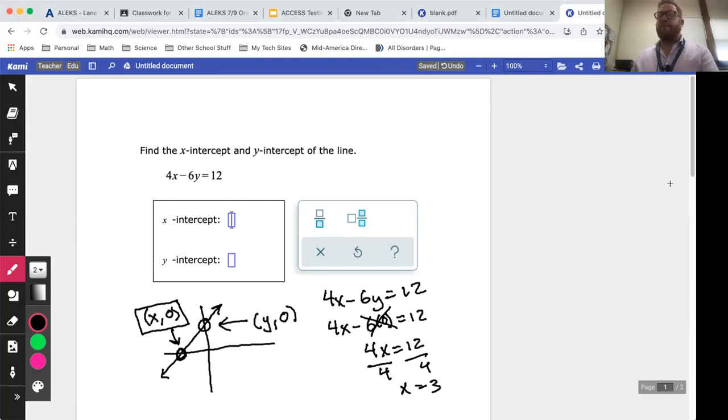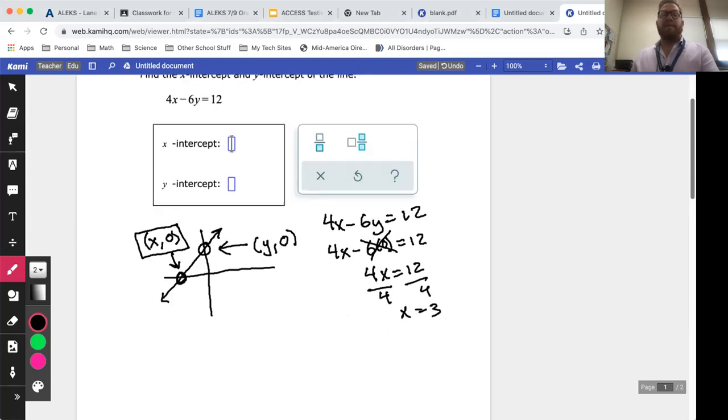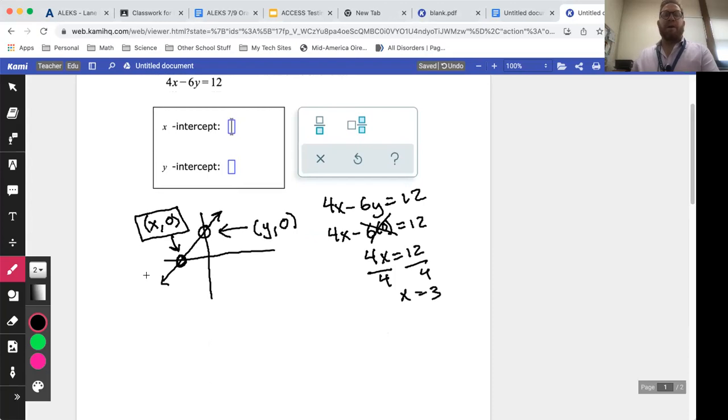You can do pretty much the exact same thing with Y. Take your equation, so we got 4x - 6y = 12. I'm going to put zero in for X, so it's going to be four times zero minus 6y = 12. Four times zero cancels out and goes away, and you're left with -6y = 12.